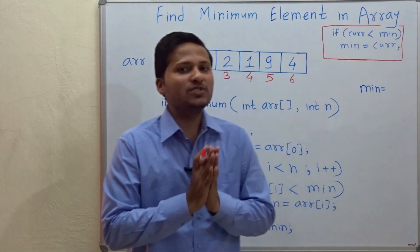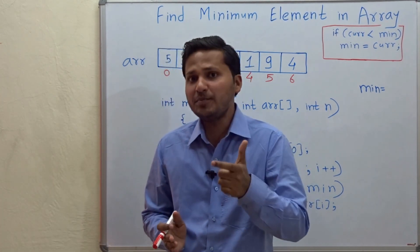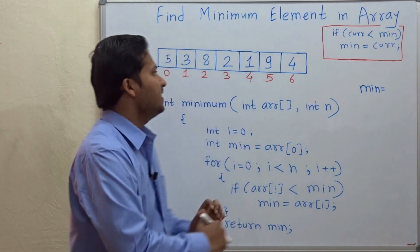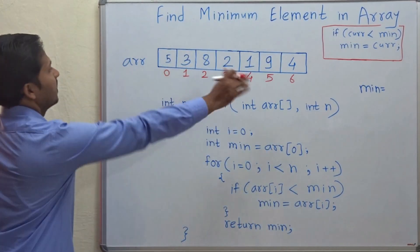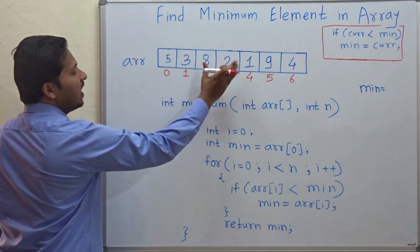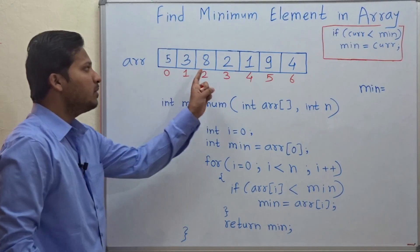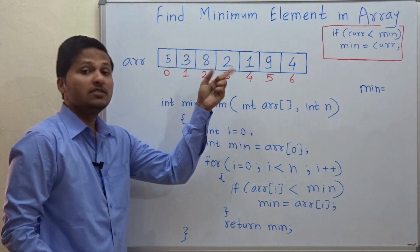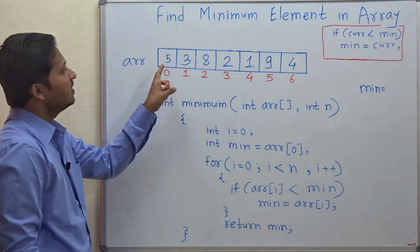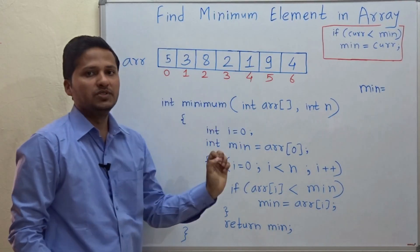Hello friends, today we are going to see how to find out the minimum element in an array. This is the array and we want to find out the minimum value in it. This array contains all integer values.